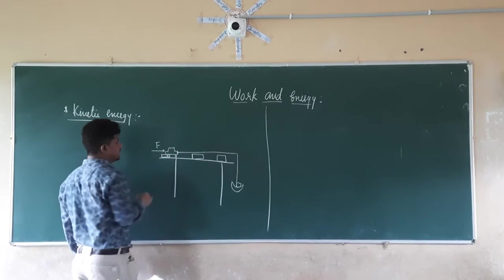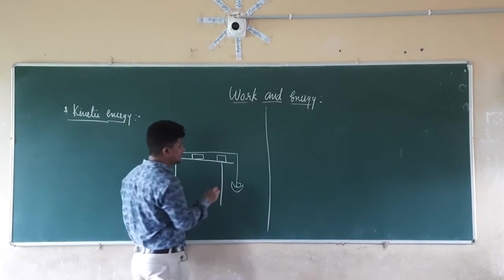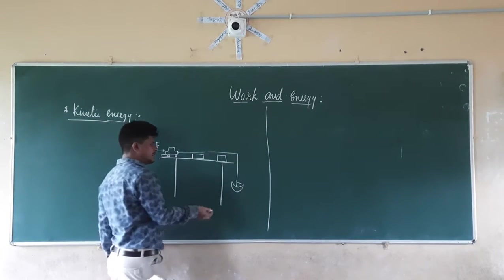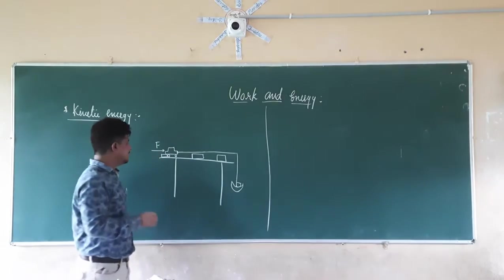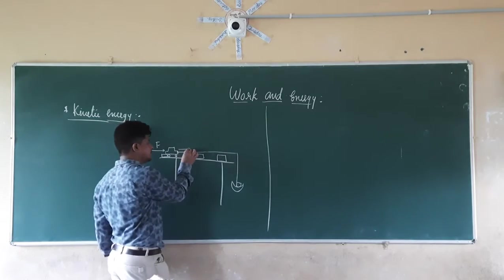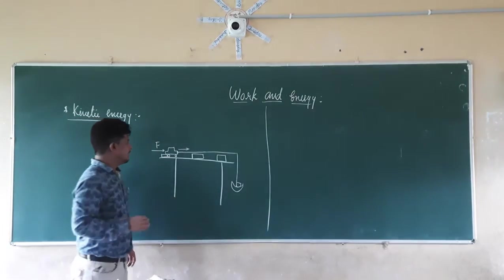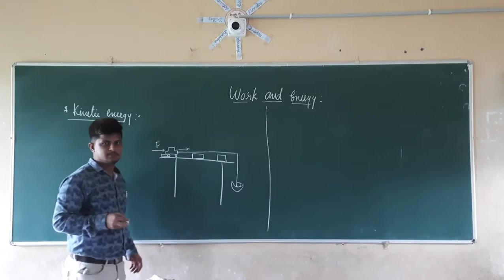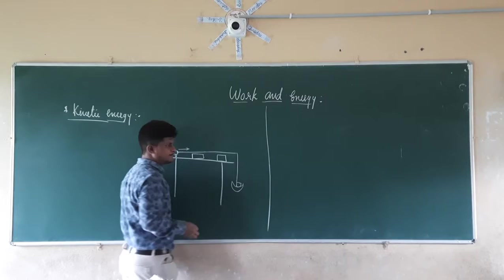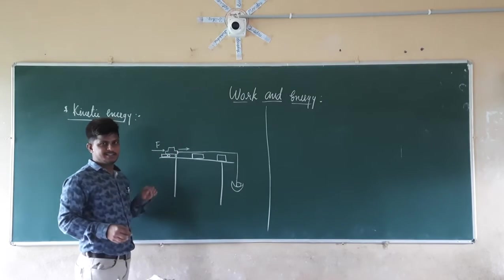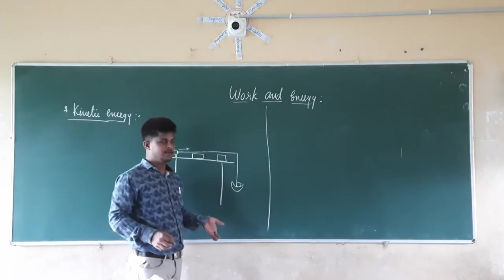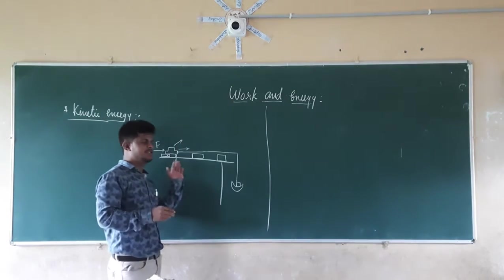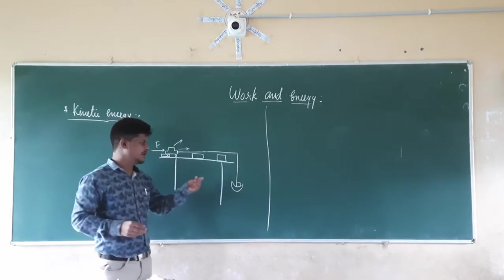The direction of force applied is forward. Initially, when you put a small amount of weight, the car doesn't move. When you add more weight, the toy car starts to move in the forward direction. When even more weight is added, the speed of the toy car increases as the weight increases.